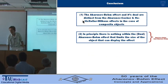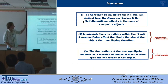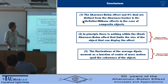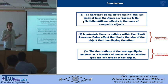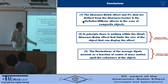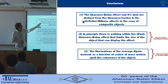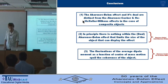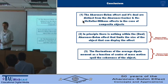So the Aharonov-Bohm effect and its dual are distinct in the case of composite objects. In principle, there's nothing within the Aharonov-Bohm effect that limits the size of the object that can display it. But in the case of the Aharonov-Casher and He-McKellar-Wilkens effects, the fluctuations of the dipole moment mean that coherence is lost. That's the end.